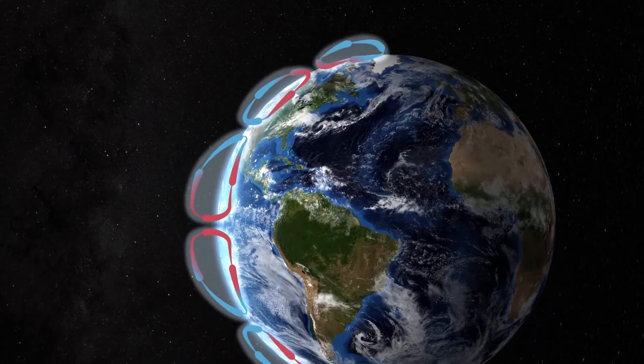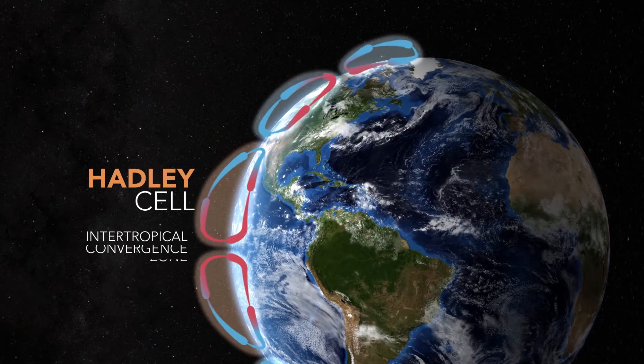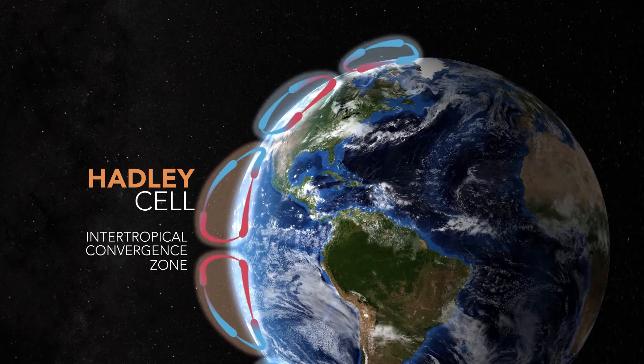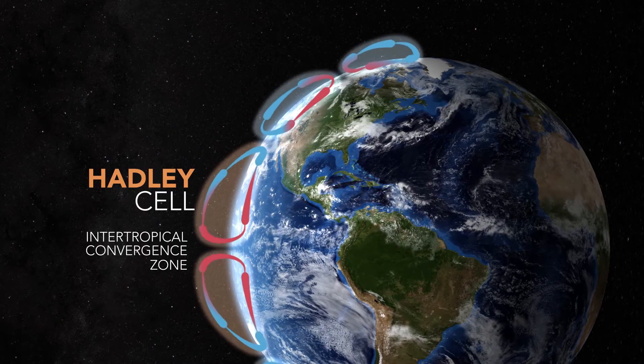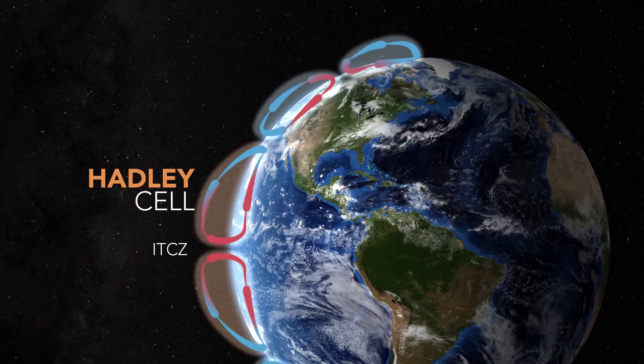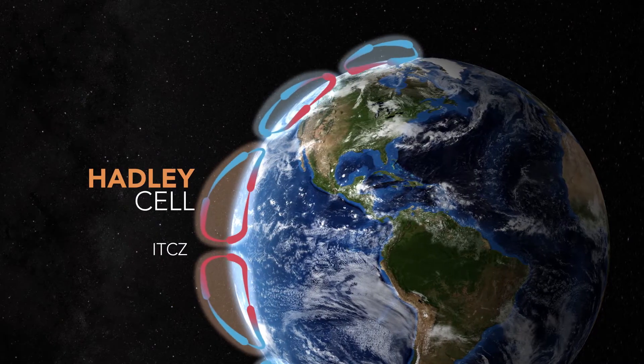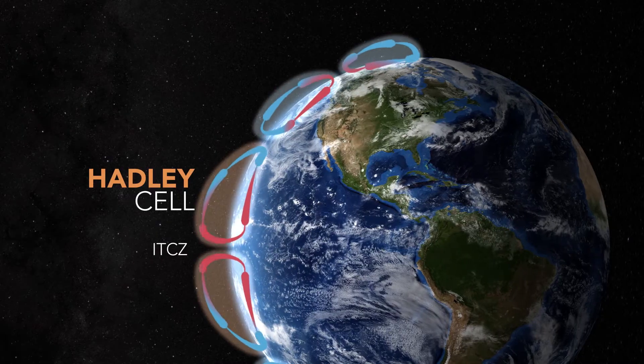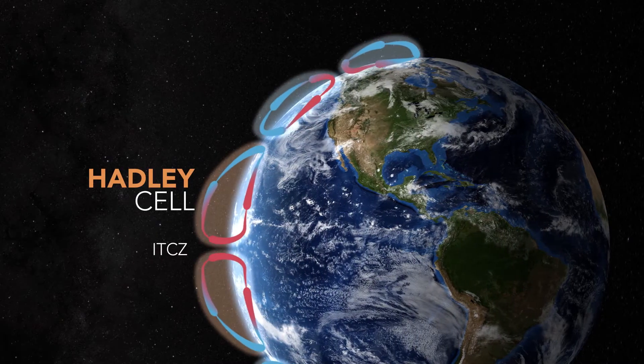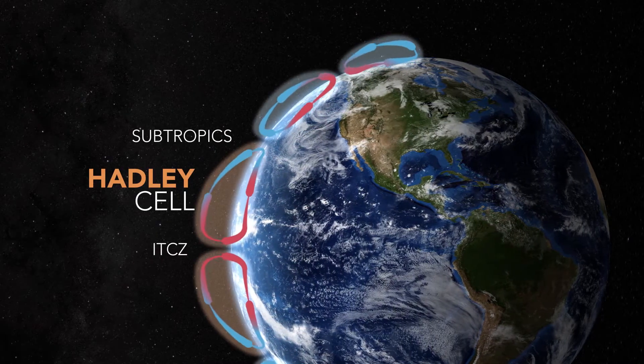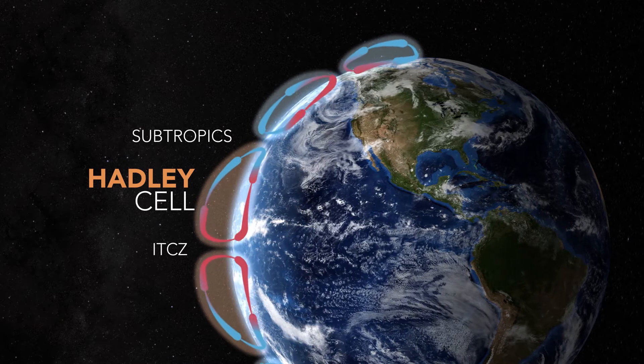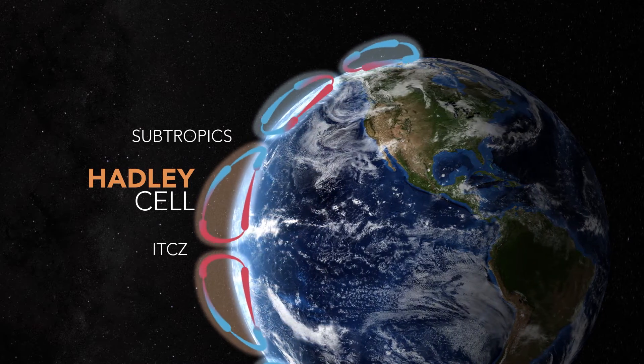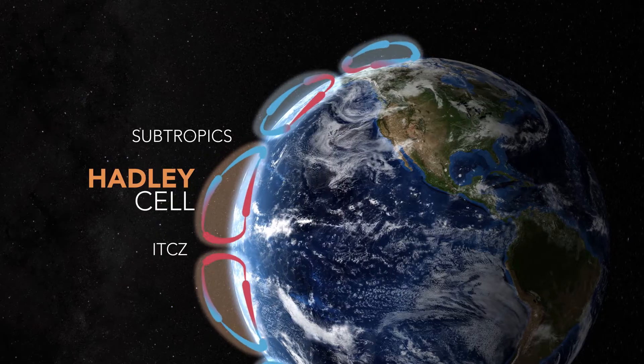The tropical circulation is called the Hadley cell. Air rises in the Intratropical Convergence Zone, or ITCZ, near the equator. The ITCZ is very rainy, and thus many of the world's luscious rainforests tend to be located in this region. The descending branch of the Hadley cell is located over the subtropics. This subsiding air tends to be very warm and dry, and is at the latitude where many of the world's deserts are.